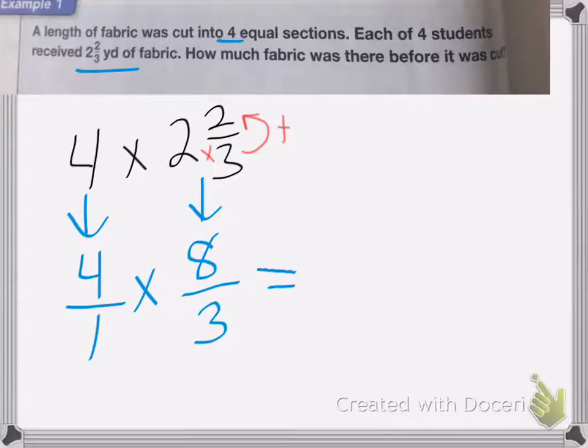Now I can multiply these across. Four times eight is 32. One times three is three. Now I'm not finished. I need to change this back into a mixed number.